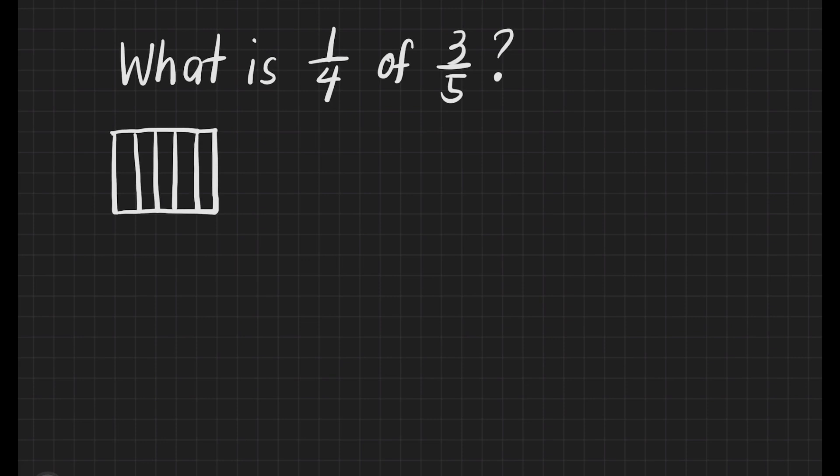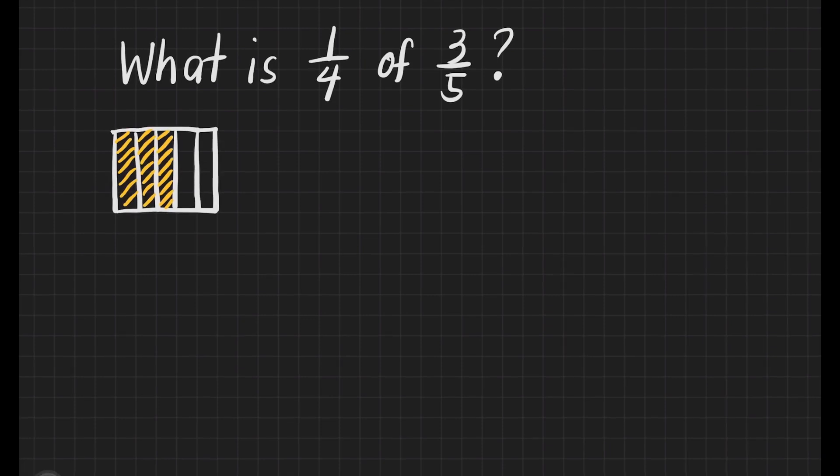Let's shade the 3 parts. That's 1, 2, and 3. That's 3/5. On the same box, we will divide it into 4 equal parts because we want to know 1/4 of it.